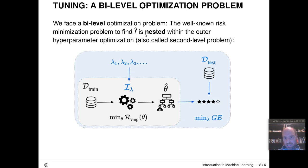And this is nested within our outer hyperparameter optimization problem which some people also call this machine learning training task a second-level inner problem usually solved by gradient descent. And this outer hyperparameter tuning problem is sometimes called the second-level or model selection problem.